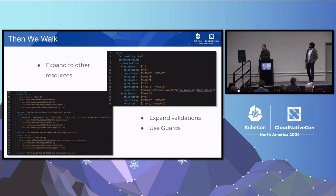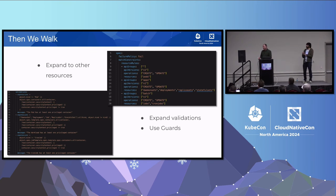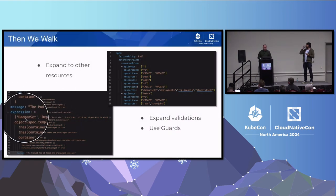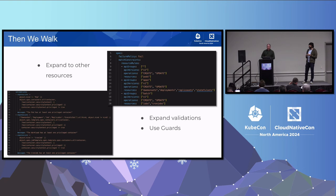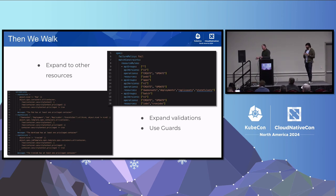The second version extends the resource rules to cover other types that contain containers. We now have three validation rules instead of one, because the resource structures are different — pods have containers directly in spec, while deployments have a template, and cron jobs have a job template. We need guards to ensure only the appropriate resource evaluates each expression. However, this policy is messy — it uses the has macro everywhere and duplicates a lot of code — and type checking produces many errors in the policy status.